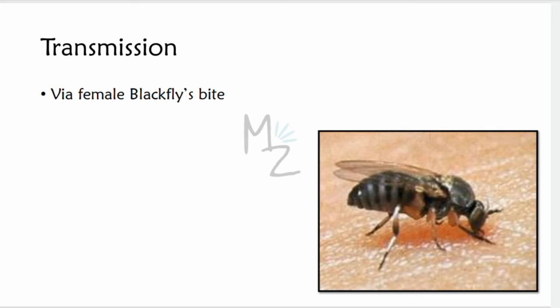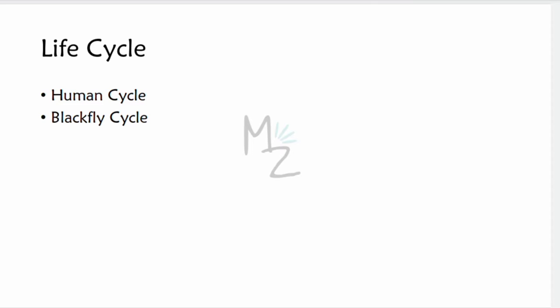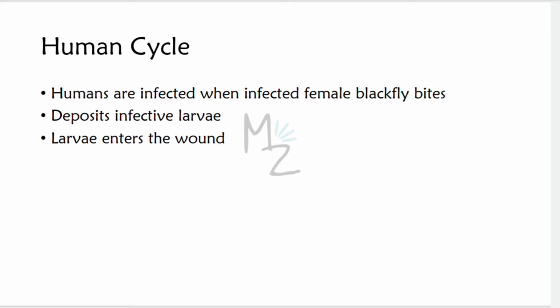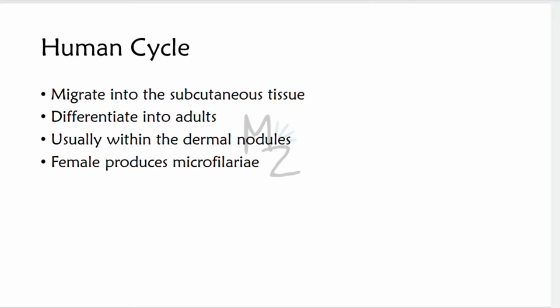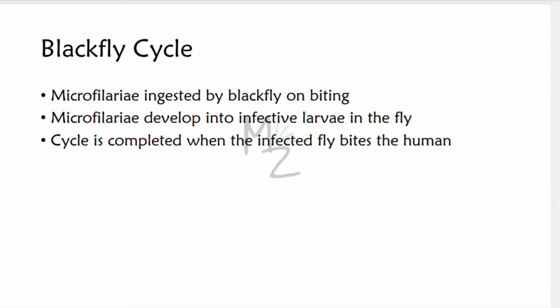The life cycle has two cycles: the human cycle and the blackfly cycle. In the human cycle, humans are infected when the female blackfly Simulium deposits infective larvae while biting. The larvae enter the wound and migrate into the subcutaneous tissue, where they differentiate into adults, usually within dermal nodules. The female produces microfilariae, which are ingested when another blackfly bites, completing the blackfly cycle. The microfilariae develop into infective larvae in the fly's body, and humans are the only definitive hosts.